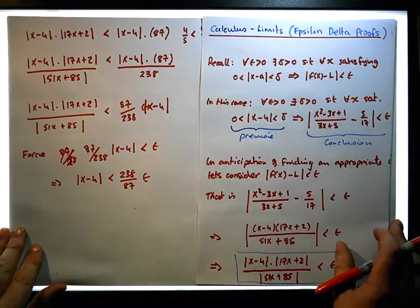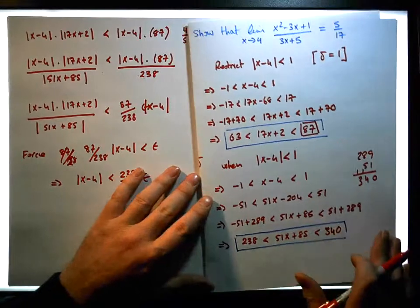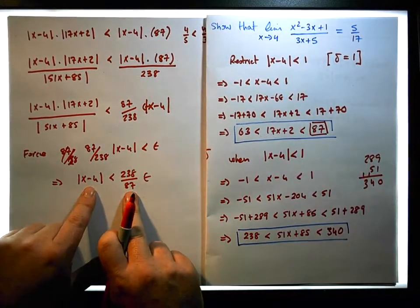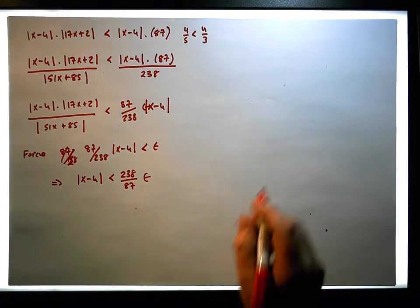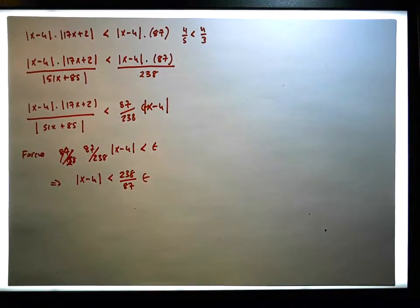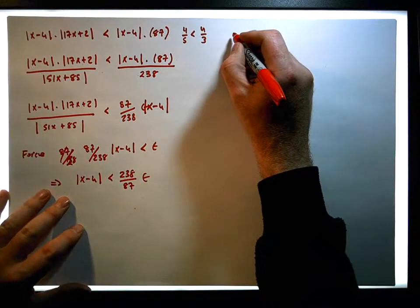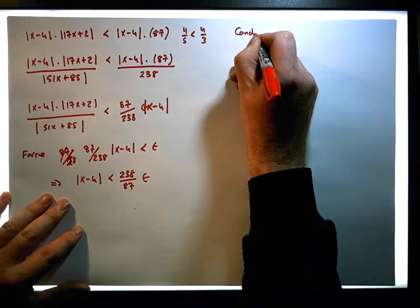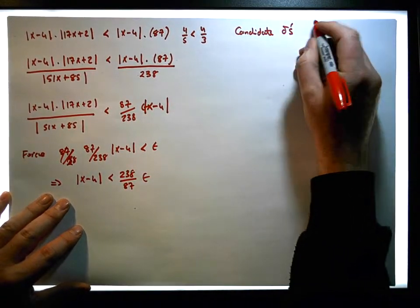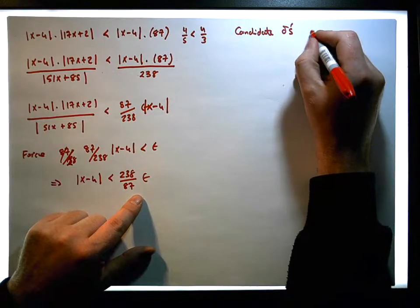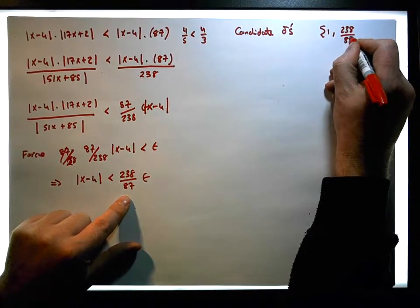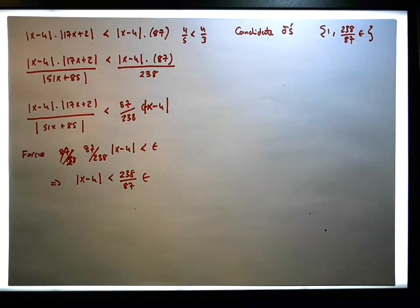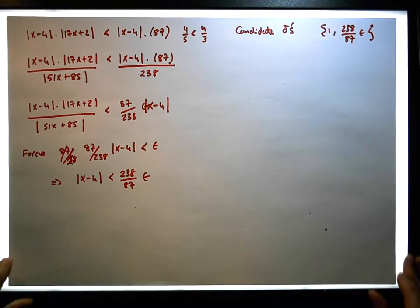So really now we have two possible deltas. We have the delta from our restriction — delta one equals one — and we have the delta from our reduction of the conclusion. So we now have two candidate deltas: the first delta is equal to one, and the elements of the set are one and 228 over 87 epsilon. Horrible numbers to deal with here, but look, it's just algebra.